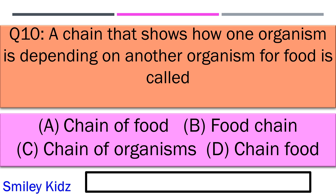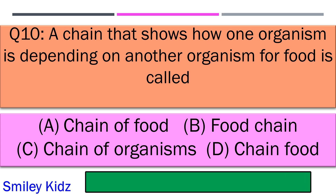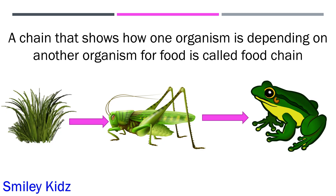A chain of organisms is called option A chain, option B food chain, option C chain of organisms, and option D chain food. Your time starts now. And your time is up and the right answer is option B food chain.